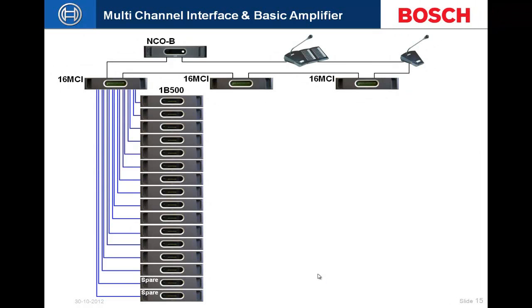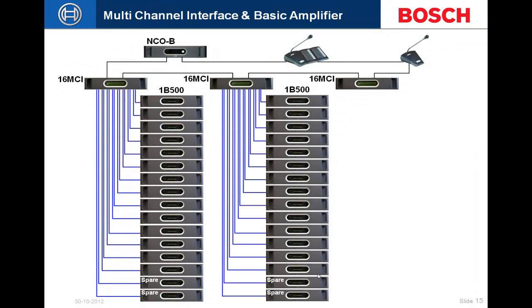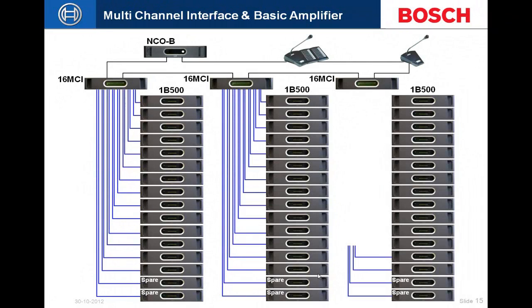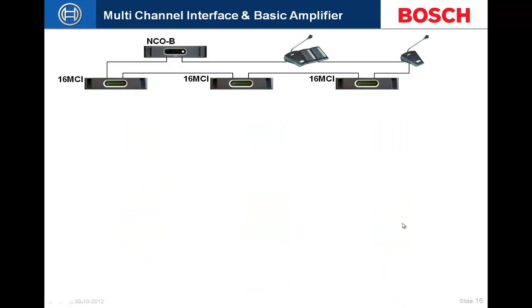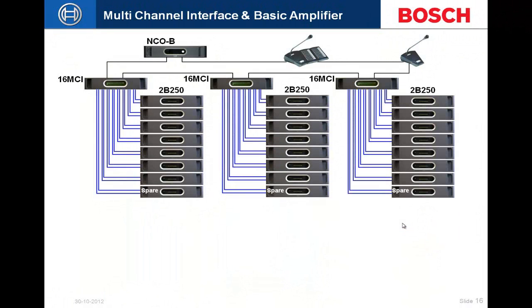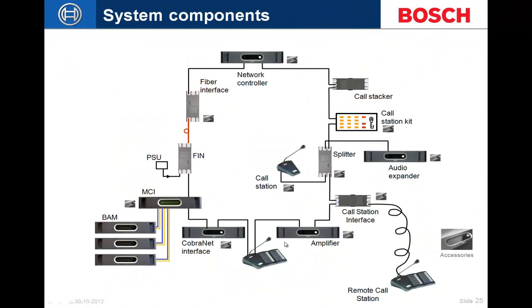Built-in supervision for basic amplifiers includes temperature sensing, output overload sensing, short circuit detection, ground short detection, and mains and backup power supervision. The front panel has LED displays for main and backup power status and VU meters for amplifier outputs. On the back, local audio inputs have volume controls and are automatically routed as a low-priority input directly to the amplifier's output. A higher-priority page coming through the MCI port automatically disables and overrides the local audio input.